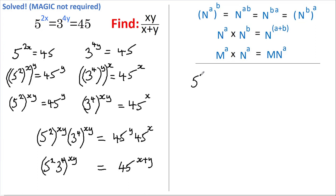Okay, I'm now going to write this equation out again with some adjustments. So we have 5 squared multiplied by 3 to the power of 4, which is of course 81, so I'm going to rewrite that as 9 squared. And that's all to the power of xy.